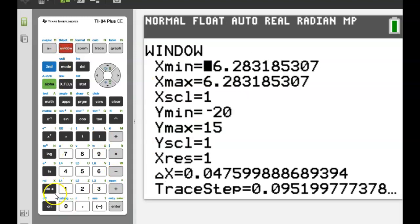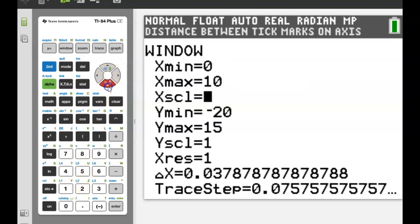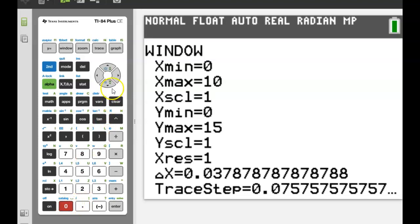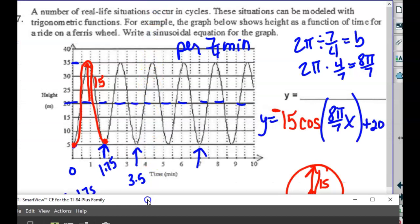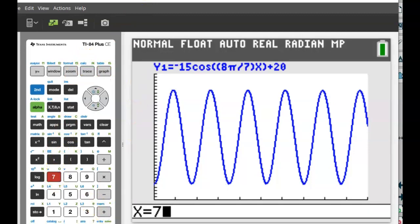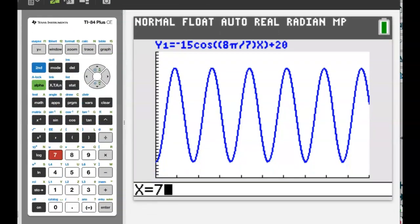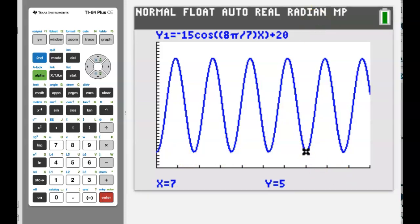Negative 15 cosine 8 pi over 7 x plus 20. My window is 0 to 10 minutes and 0 to 40. Is that looking right? Now, give me a point that's on our graph. Trace 7. Is that 7, 5? Does it look like the fourth time you've hit the bottom? Yay! We're magical.